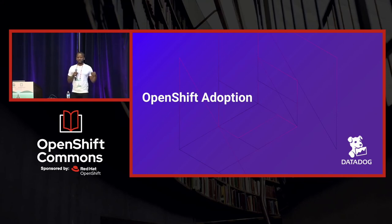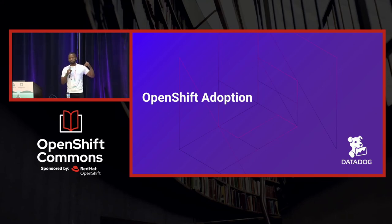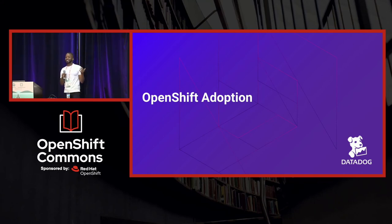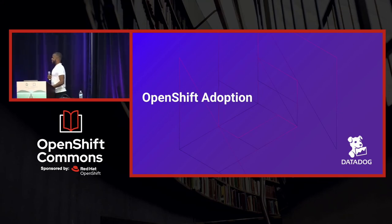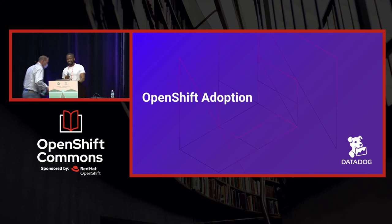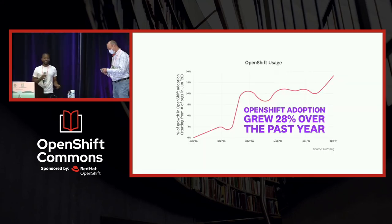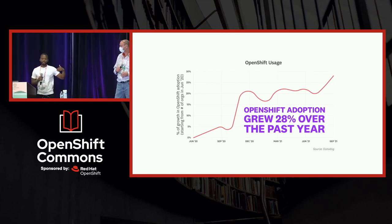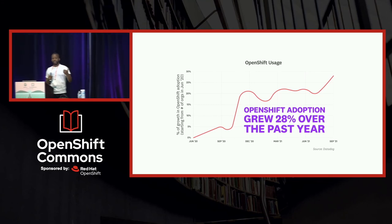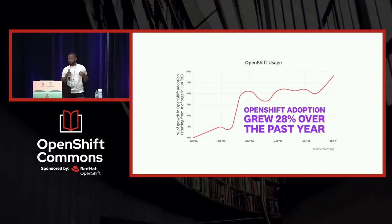The percentage growth of users using OpenShift — by a show of hands, over 10% growth or less than 10% growth? It turns out that roughly 28% growth in the past year has happened. Organizations are finding tremendous value out of the advanced security features and other features for managing their clusters.